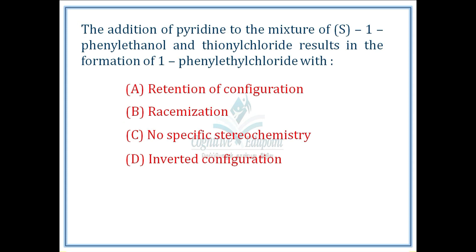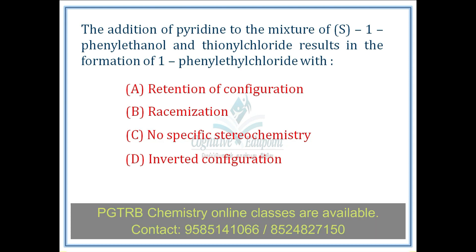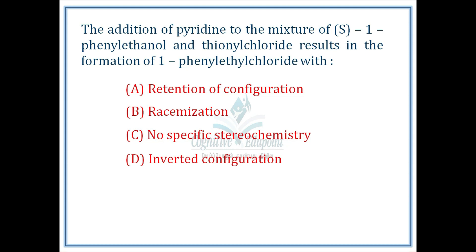The addition of pyridine to the mixture of S-1-phenylethanol and thionyl chloride results in the formation of 1-phenylethyl chloride. If we look at the reaction of thionyl chloride, it usually involves retention of configuration, but you can add pyridine to change this outcome.